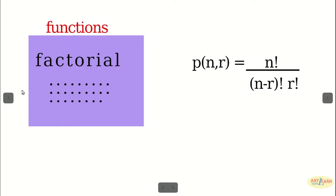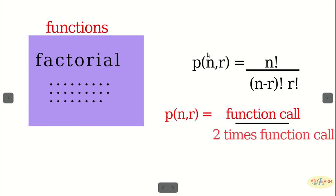What we will do is wrap the previously written factorial code inside a function. Now factorial becomes a function, and in the permutation formula there are three factorial calls, so we will just call that function using one line. Instead of writing four or five lines of factorial code three times, we just call that function three times and can calculate the expression in a few lines. That's the main use of a function.